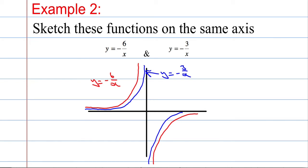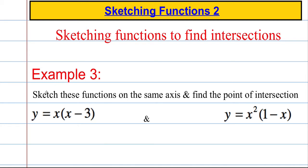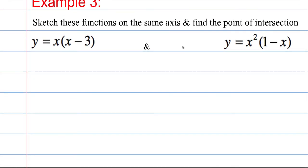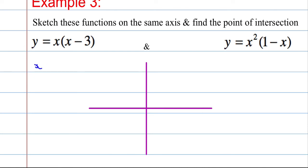Let's take a look at another type of example — example 3. We're looking to sketch these functions on the same axis and find a point of intersection. Let's start by drawing our axis. This function is a quadratic function because the highest power of x is x squared, and I know the solutions are going to be where x is 0 and x is 3. That's a quadratic where the highest power of x is positive, so it's going to come down like this and then pass up through x equals 3 and go on to infinity.